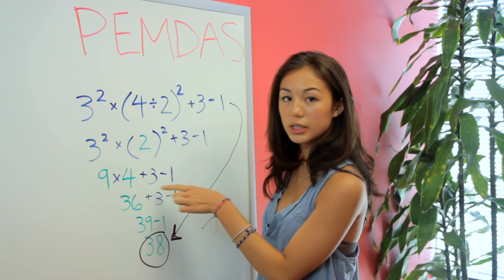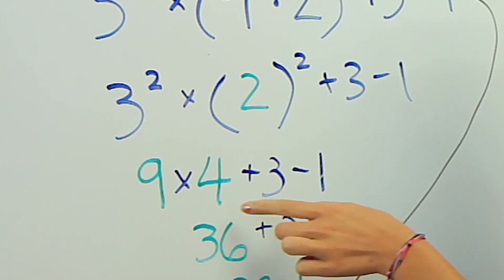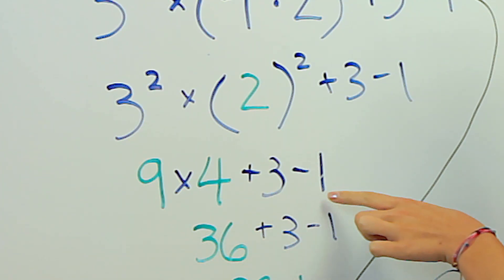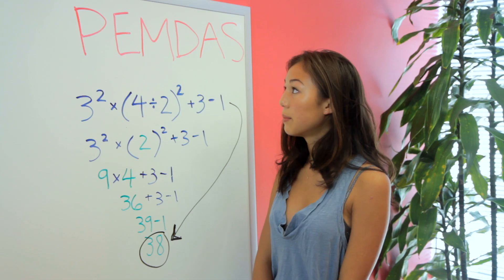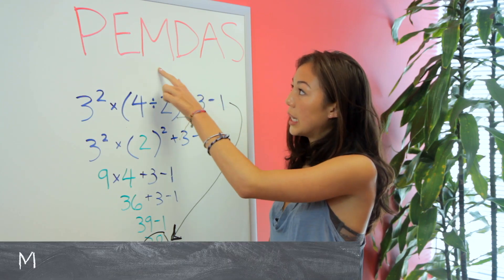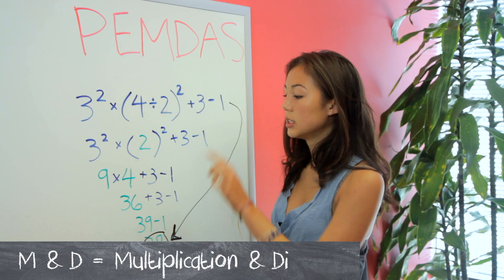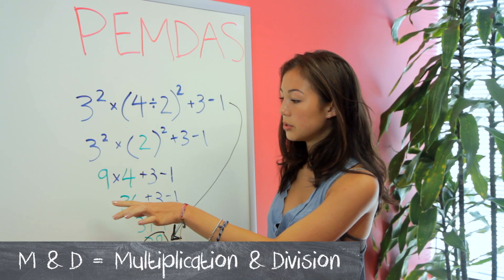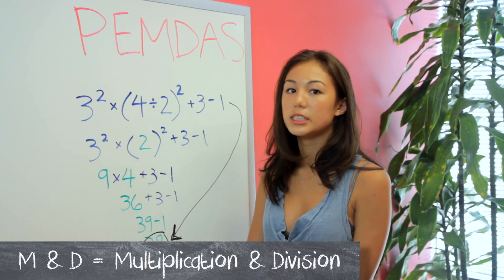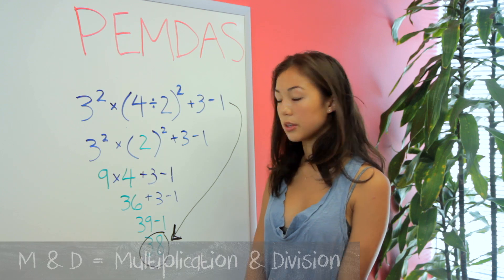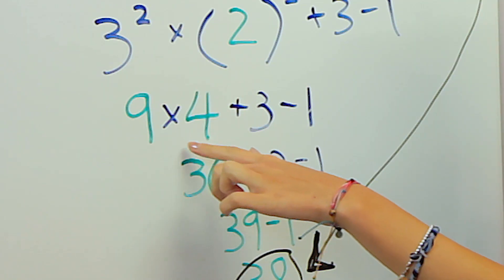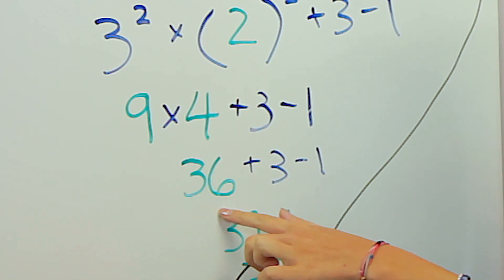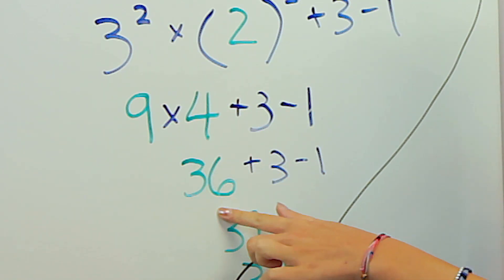So I've written this here: 9 times 4 plus 3 minus 1. Next step, we have multiplication and division. So we do all the multiplication and division that's in the equation. Here we just have 9 times 4, so we do that — we get 36.